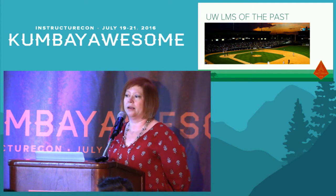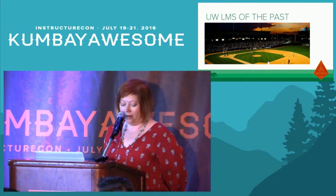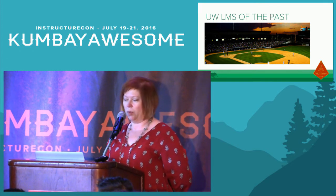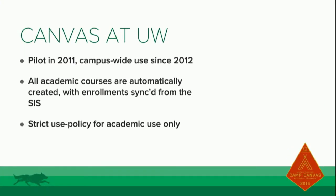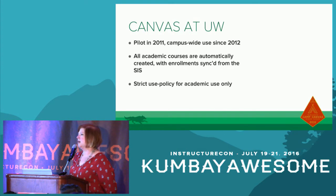So we had people using our home-built tools for supporting academic courses, but they used them for lots of other things as well, including supporting employee training, administrative collaboration, and just distributing information. When we moved to Canvas, this made it really hard to support the service. We took that opportunity to change our strategy. We piloted in 2011 and we've been using it campus-wide since 2012 with our branch campuses as well. We started with a very strict policy — we only let academic courses use Canvas.